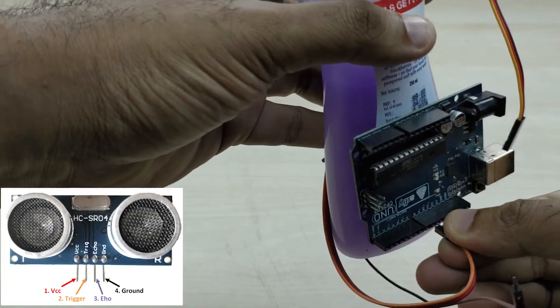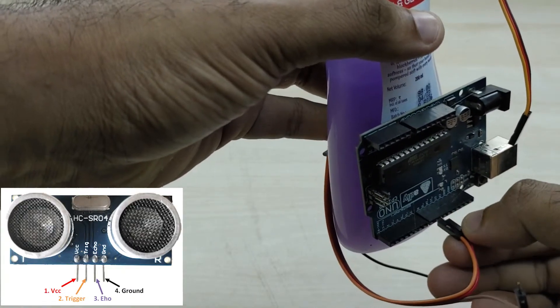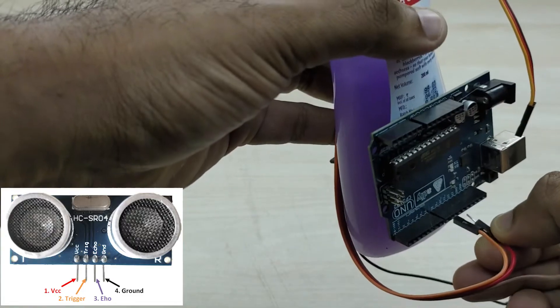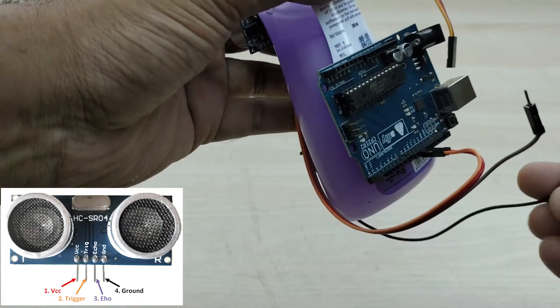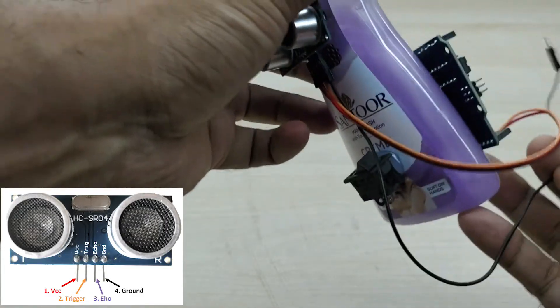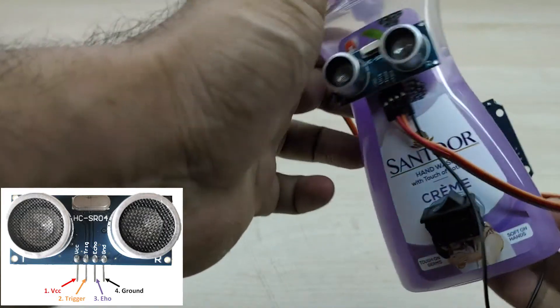Connect the positive pin to the plus 5 volt pin of the Arduino board, ground pin of the sensor to the ground pin of the Arduino board, echo pin of the sensor to pin number 9 and trigger pin of the sensor to pin number 10 of the Arduino board.